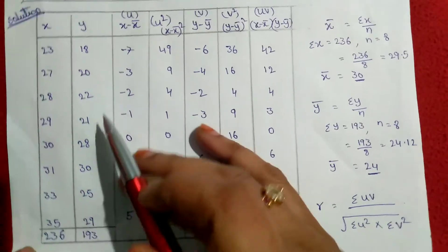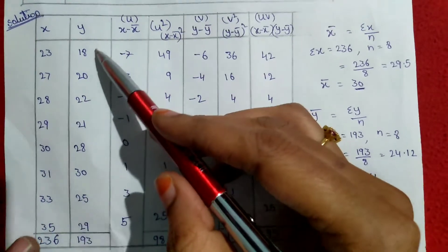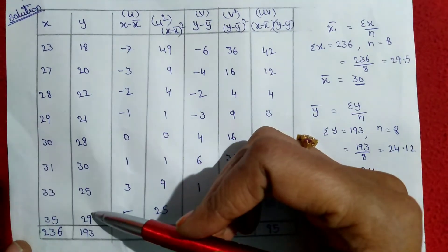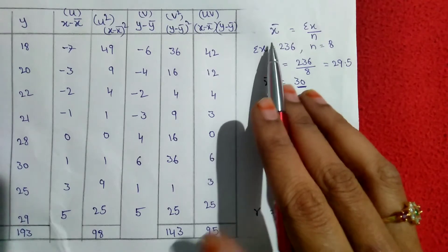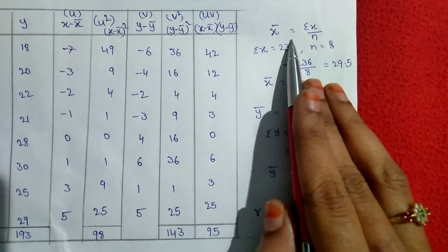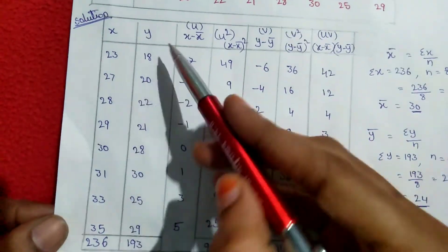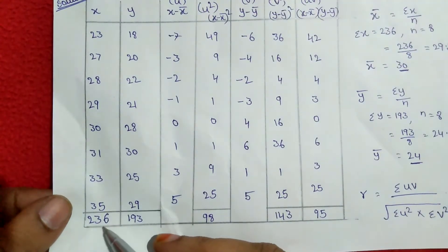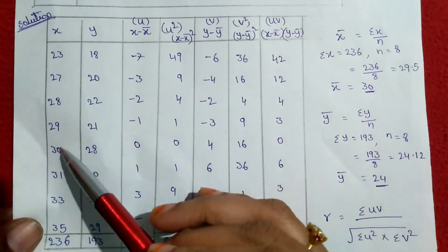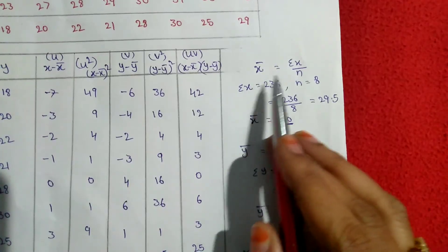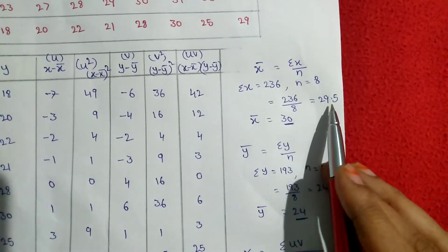Solution. First, we have to find x-bar and y-bar. The formula for x-bar equals summation x by n, where summation x means total sum of x values. The summation x is 236, and n — the number of observations — is 8. So x-bar equals 236 divided by 8, which equals 29.5, rounded to 30.